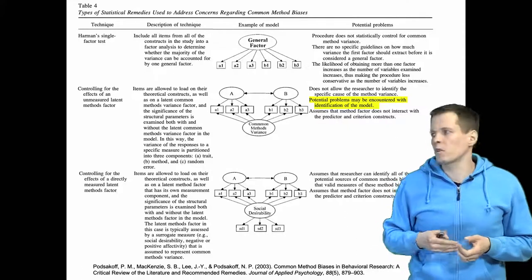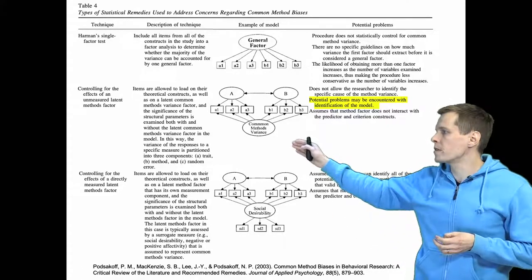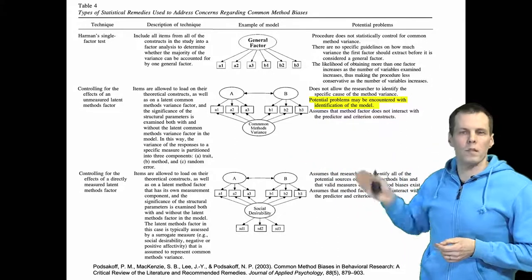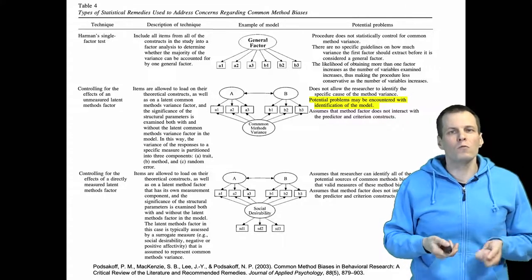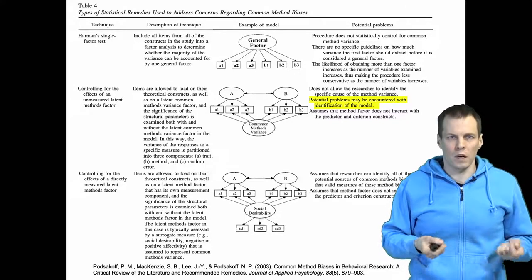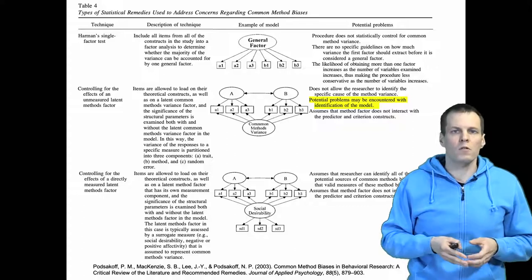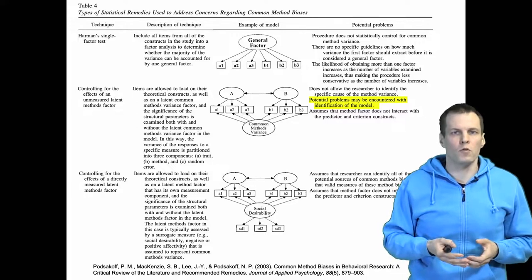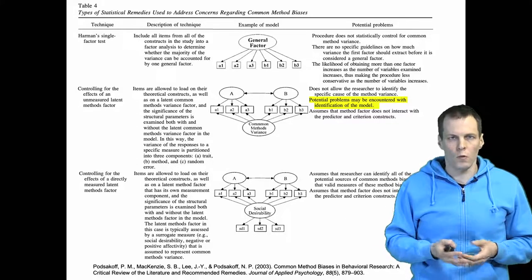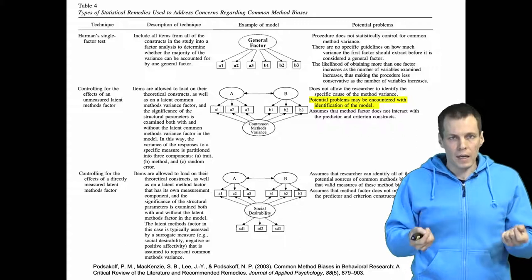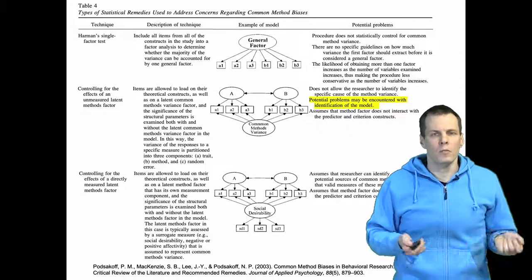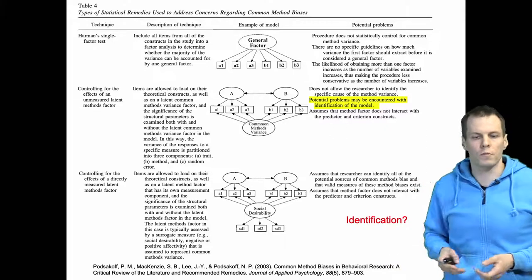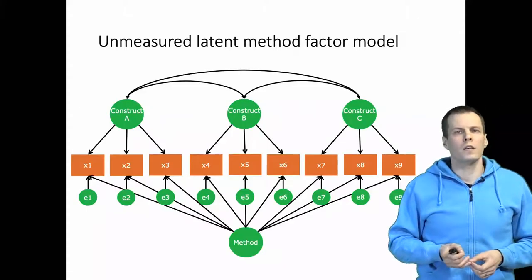Articles about these models, particularly the unmeasured latent method factor model, note that there are potential identification problems, but these articles don't really explain what the identification problem is about. Researchers have noted that when using this model the software tends to produce warnings or not produce standard errors — indications of non-identification — but the identification status of these models has not been addressed well in the literature. So let's take a look at the identification of this kind of model.